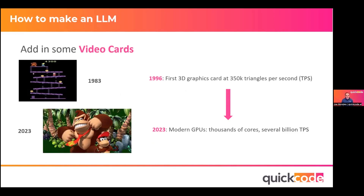How do they do these triangles per second? Math. Everything required to render that 2023 picture of Donkey Kong — all of the lighting and the shading and the 3D effects and all the surfaces — it's all math. And coincidentally, it's the same math that's required to generate those neural networks we talked about. So you got the idea of a neural network, and then you feed it this really capable hardware, which was driven by the gaming industry. At some point a smart data scientist said, hey, I can use these video cards to process my neural networks — and voilà, AI was transformed.